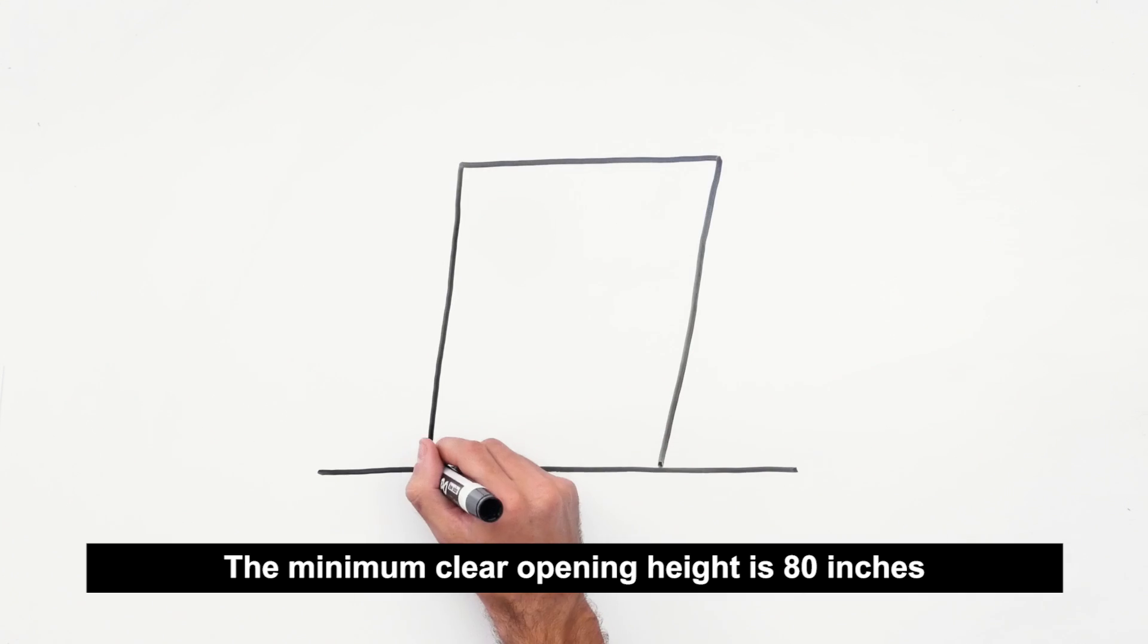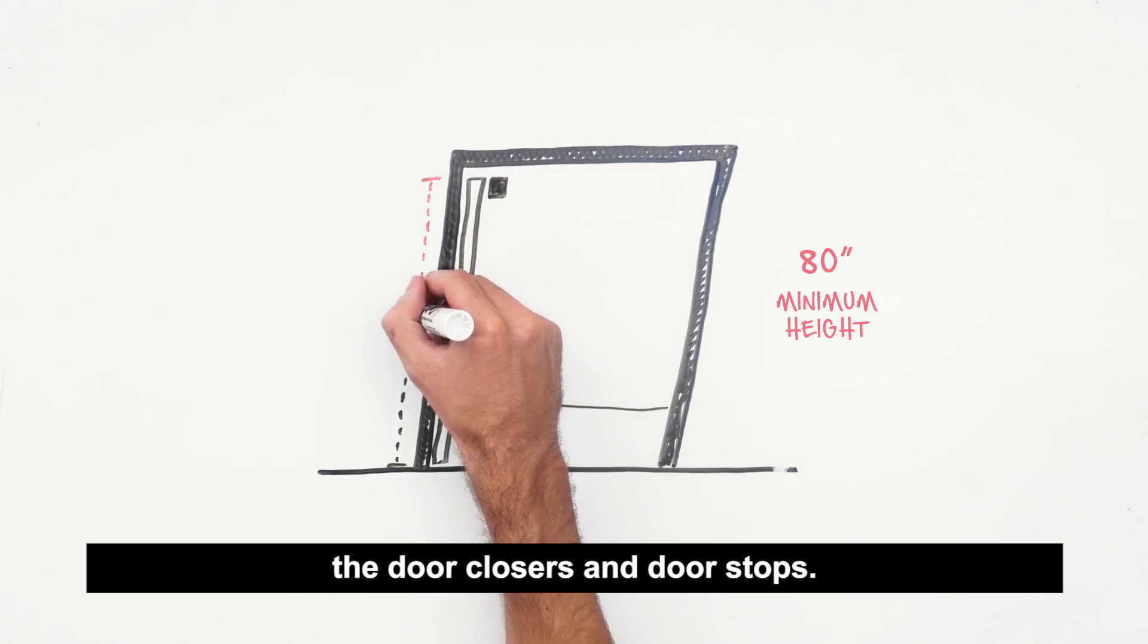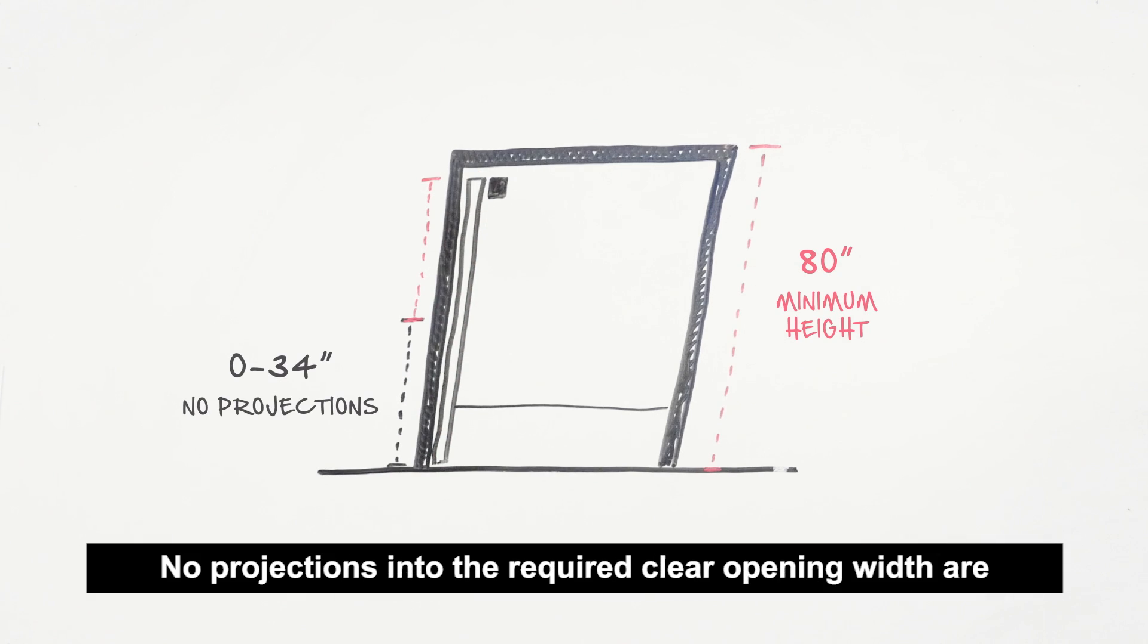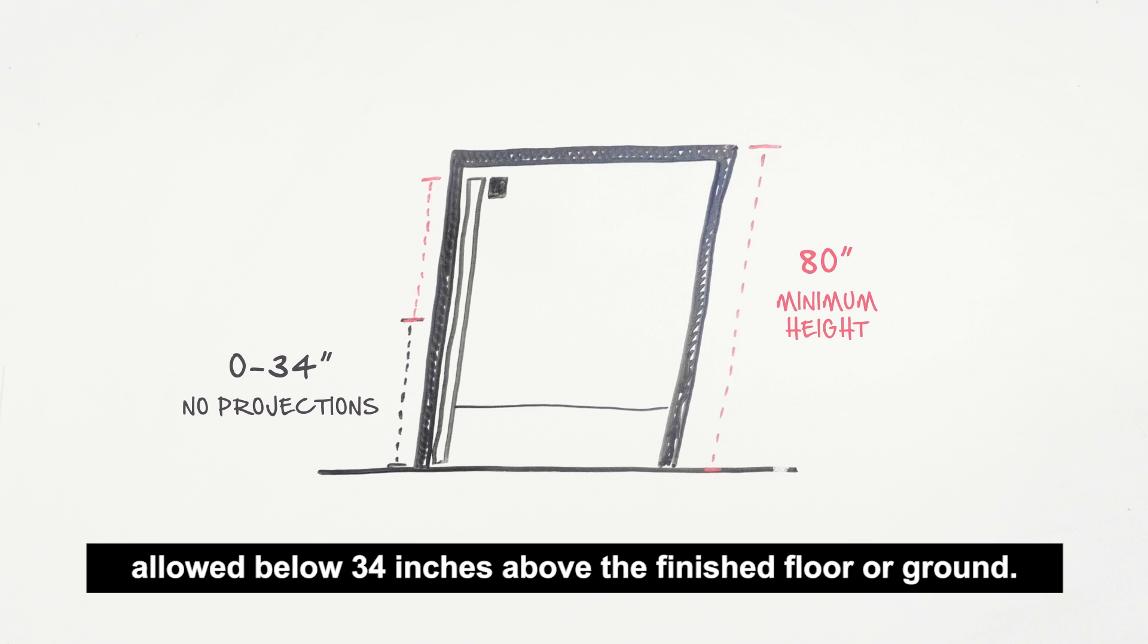The minimum clear opening height is 80 inches, with a minimum height of 78 inches measured to the door closers and door stops. No projections into the required clear opening width are allowed below 34 inches above the finished floor or ground. Projections into the clear opening width between 34 and 80 inches are limited to 4 inches.